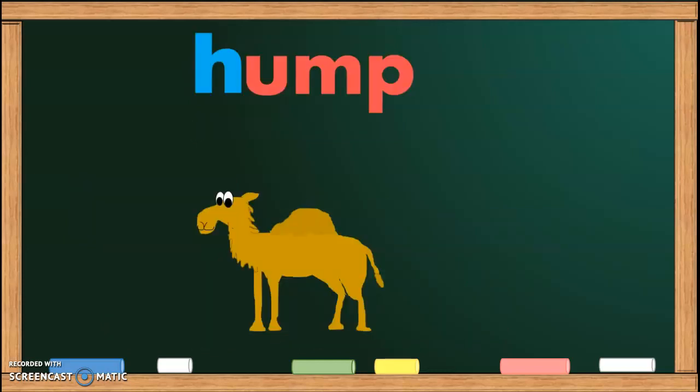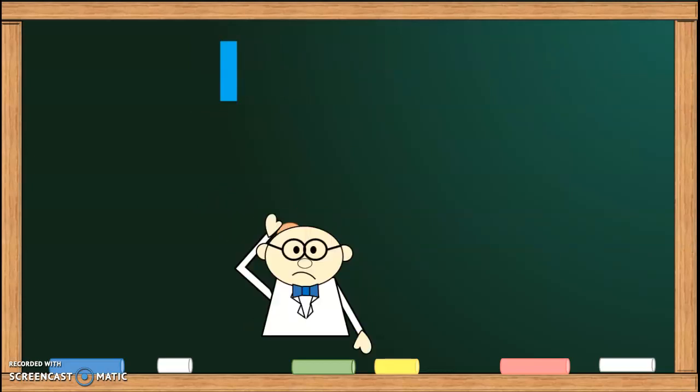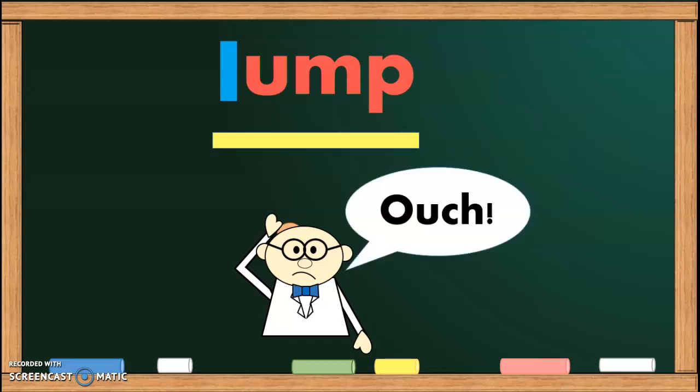H, UMP, HUMP. That camel has one hump. L, UMP, LUMP. How'd he get that lump? Ouch!